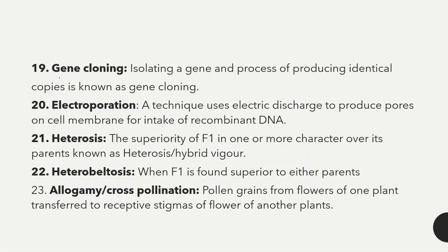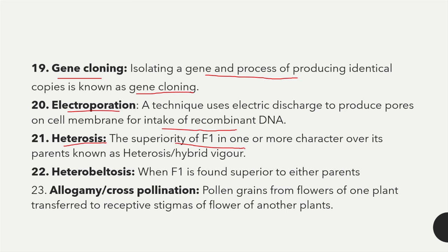Gene cloning is the isolation of a gene and the process of producing identical copies — this is known as a gene clone. Electroporation is a technique which uses electrical discharge to produce pores on the cell membrane for the intake of recombinant DNA. Heterosis is the superiority of F1 in one or more characters over its parents, also known as hybrid vigor.